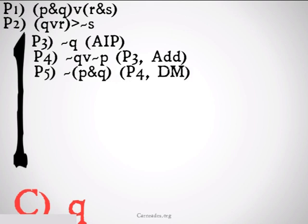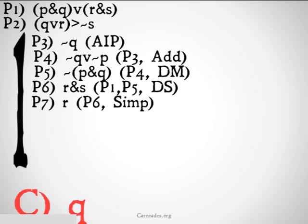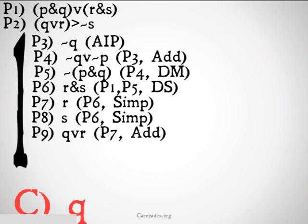We're going to do that in order to get not p and q, premise 4, De Morgan, so that we can do a disjunctive syllogism on premise 1 to get r and s. We're going to simplify that down to r. We're also going to simplify it down to s. We're going to conclude q or r.